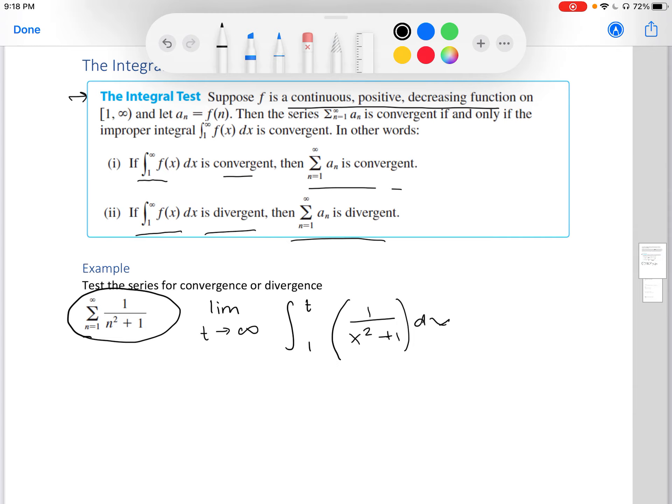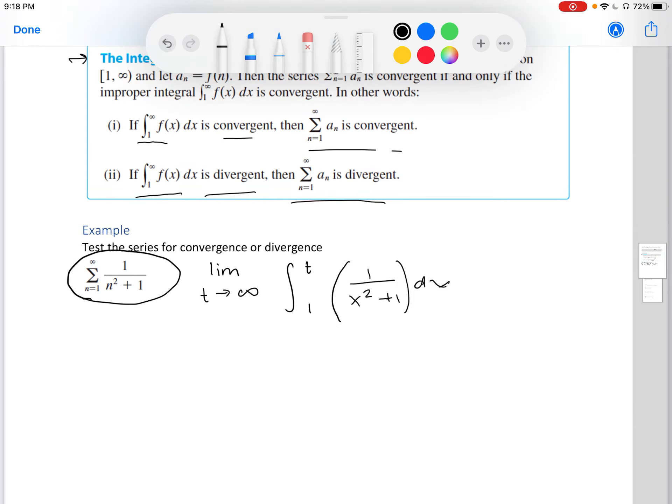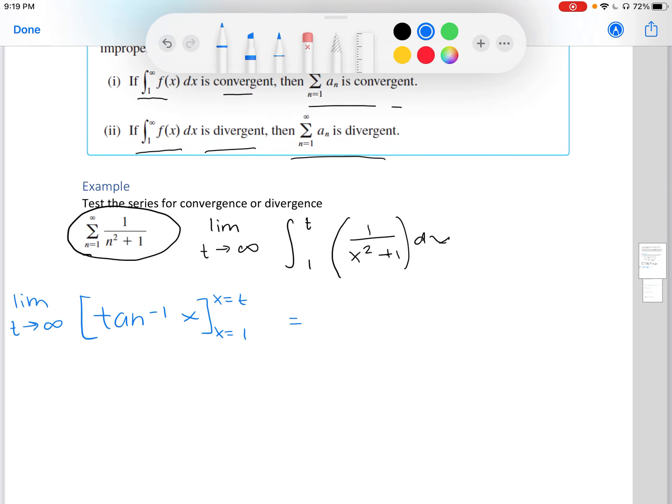Let's find this integral. This is one of those trig identities. Our integral is tangent inverse of x. We're going to let x equal t and x equal 1. As t is approaching infinity, that's our limit. Let's go ahead and plug in these values. We have tangent inverse of t minus tangent inverse of 1. For tangent inverse of 1, we know that's pi over 4.